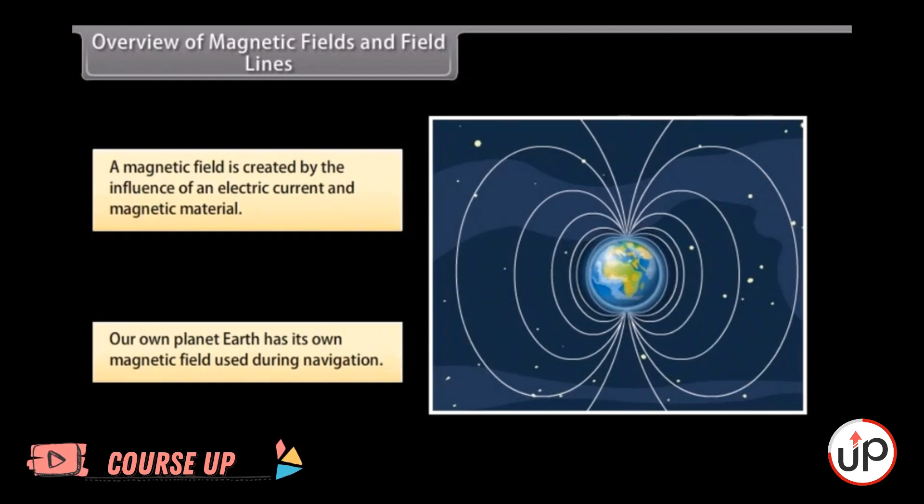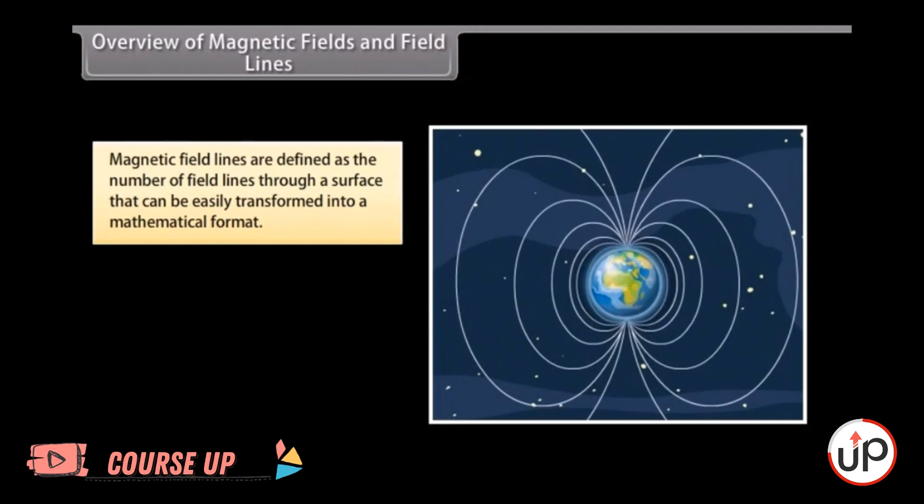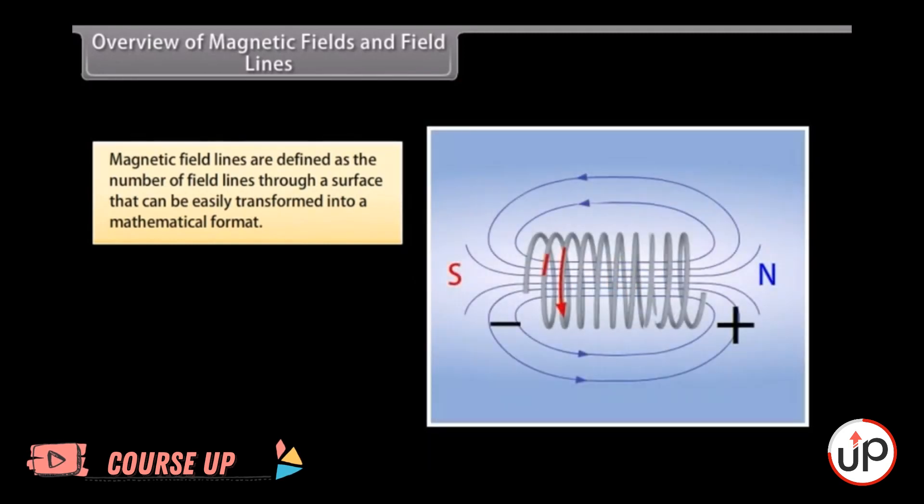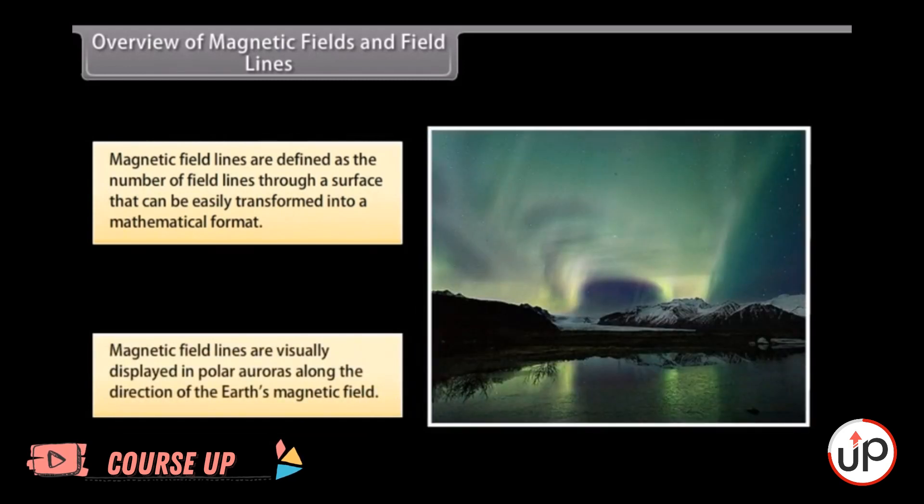Magnetic fields are also used in electric devices, such as transformers. Magnetic field lines can be compared to the constant altitude lines that are visible on a map. Magnetic field lines help in stating simple concepts of magnetism easily. These are defined as the number of field lines through a surface and can be easily transformed into a mathematical format. Magnetic field lines are visually displayed in polar auroras where visible streaks of lines are created along the direction of Earth's magnetic field.